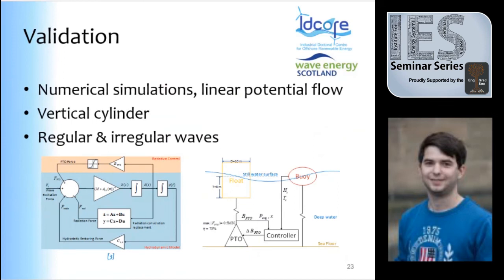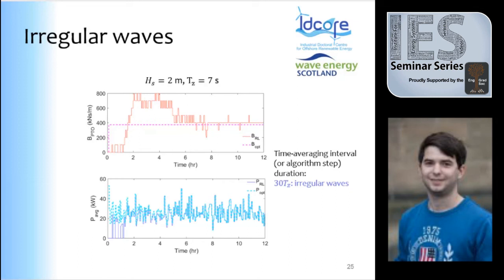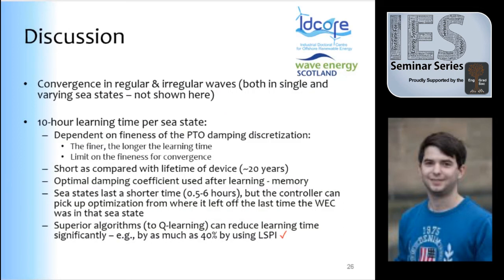This case study was tested and validated with simulations because I didn't have funding for experiments — and with simulations you know exactly what the optimal should be. In regular waves, reinforcement learning does learn the optimal damping coefficient and corresponding generated power quite well. In irregular waves, where even the average power is very noisy, it also works — that was a really difficult test case. However, one concern is that it takes about eight to ten hours to converge, which is a very long time.